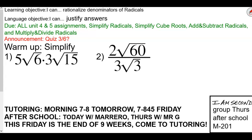So we know, we wrote down our warm-up. When we're multiplying, we do outside times the outside. Five times three is fifteen. And then square root, and then inside times the inside. Six times fifteen is ninety.